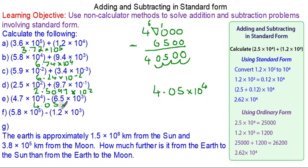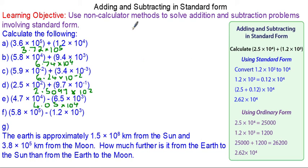Moving on to question f: we've got 5.8 × 10⁵, which is 580,000, minus 1.2 × 10³, which is 1,200.